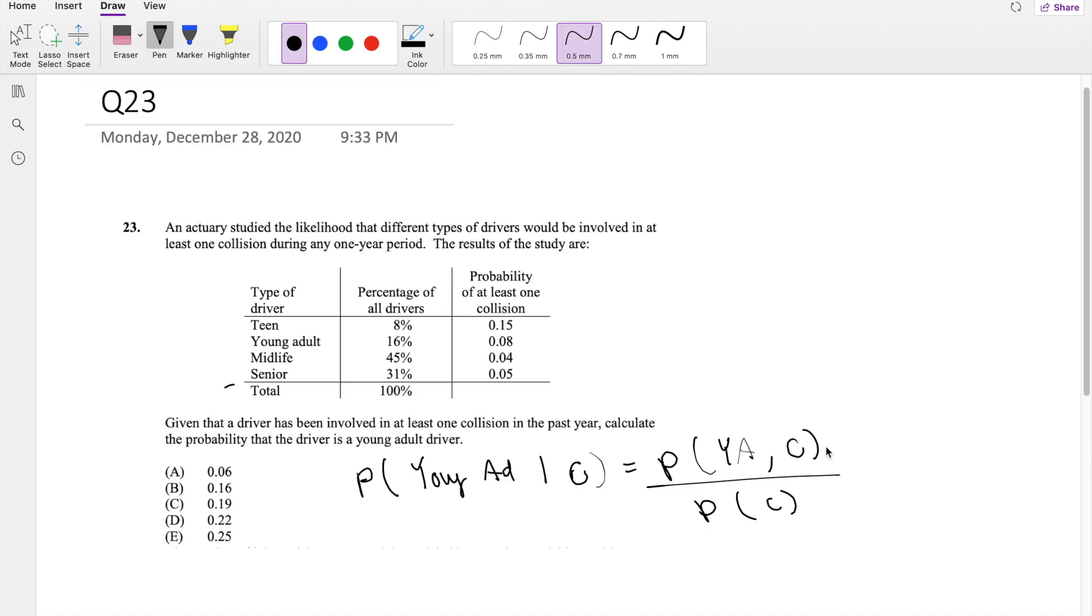So in order for us to find the probability that they were young adults and had a collision, we just have to multiply the probability that this certain age group is going to have a collision, times the percentage that they make up of the whole population that this insurance company insures.